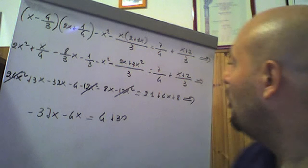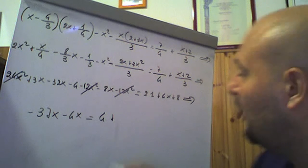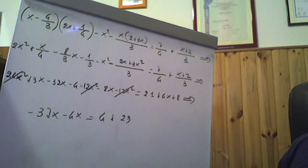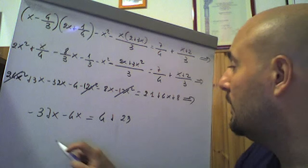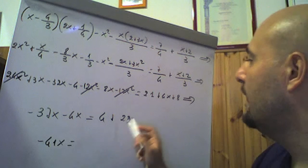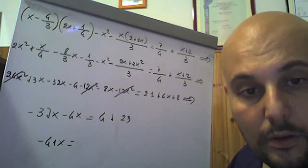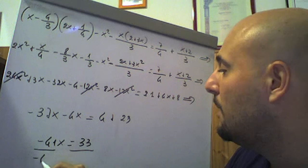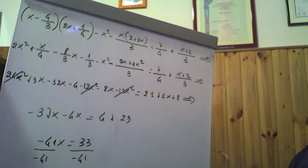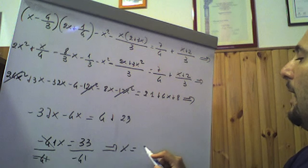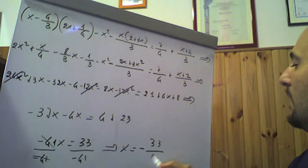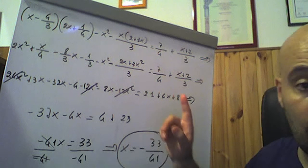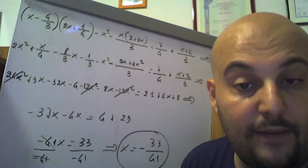21 più 8 fa 29, mi distraggo a volte. Otteniamo -37x meno 4x è -41x uguale 29 più 4 è 33. Divido ambo i membri per -41: x è uguale a -33/41. Questo è il risultato corretto, corrisponde a quello del libro. Se fate la verifica sostituendo -33/41 ad ogni x, vi verrà la conferma.